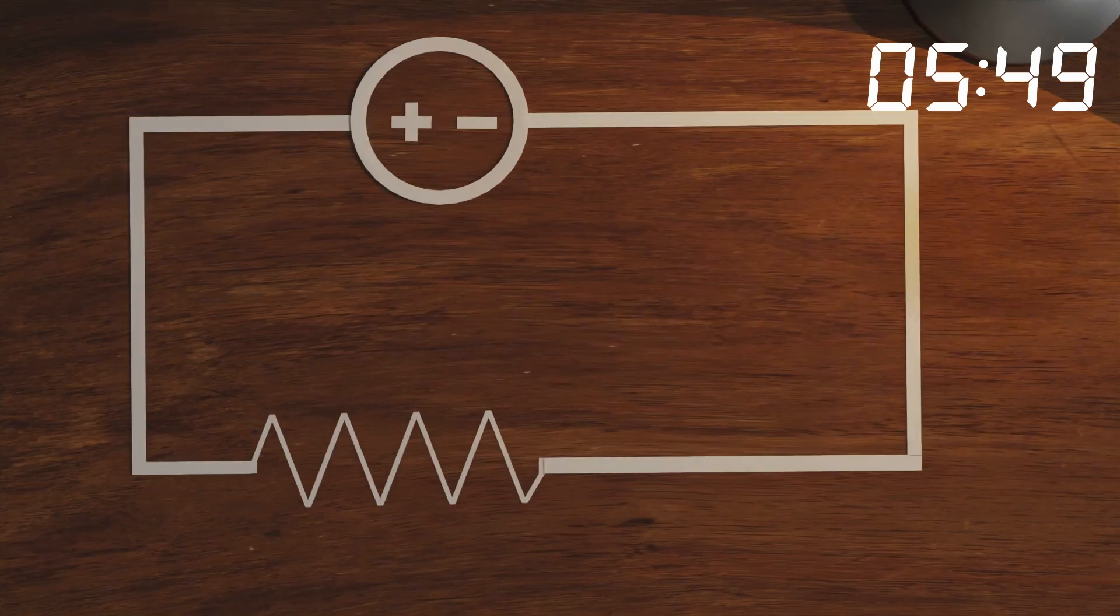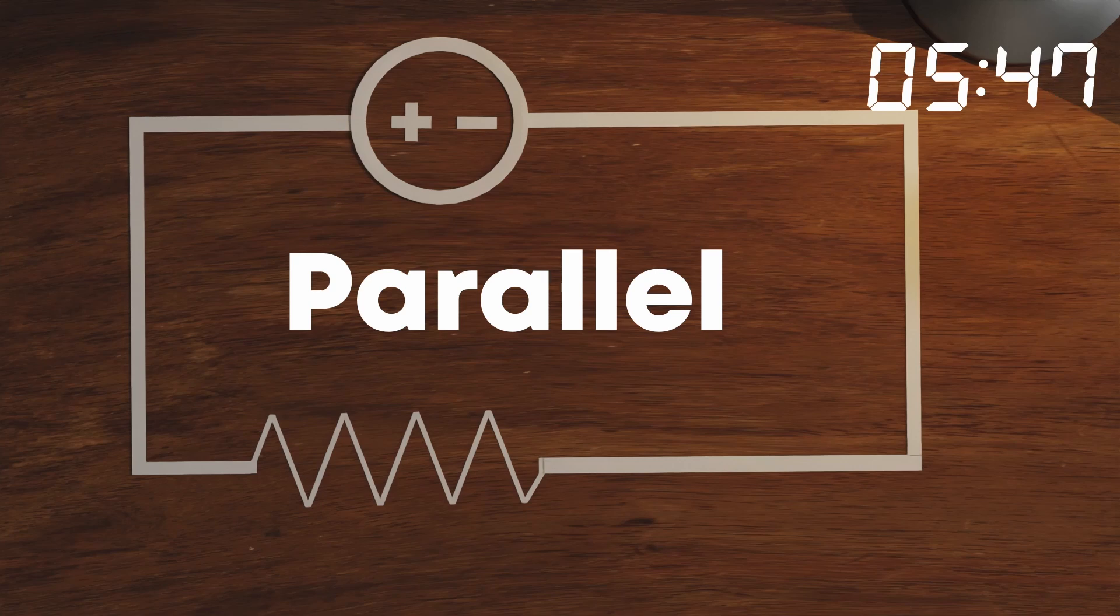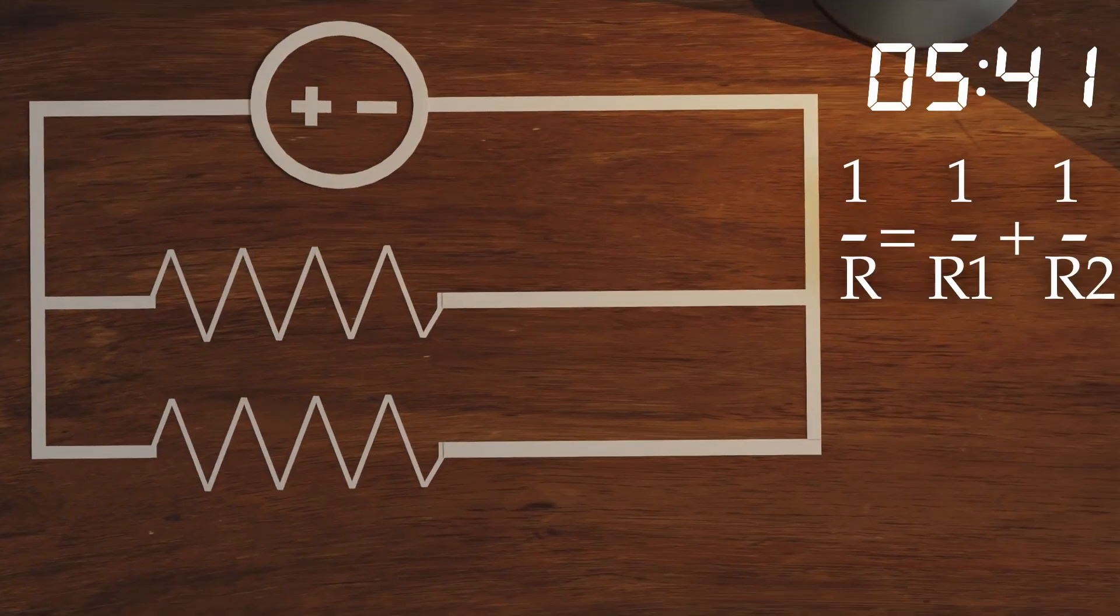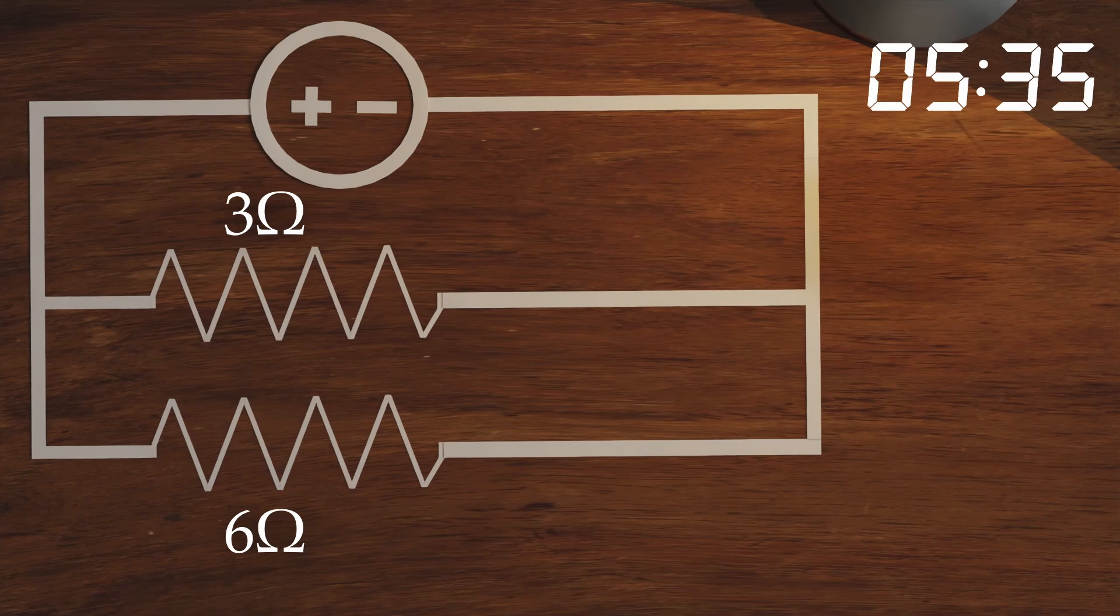The second way to add resistors: when they are in parallel—that is, when the start and ends are attached to the same point—then we can add one over the resistance and finally flip that. So here we would have one-third plus one-sixth equals three-sixths. Flip that, so the resistance will be two ohms.